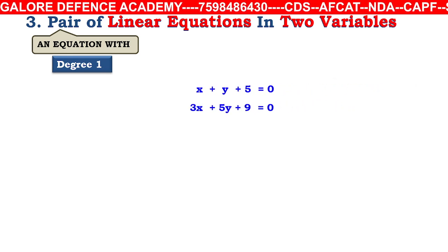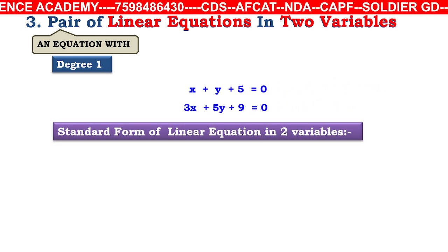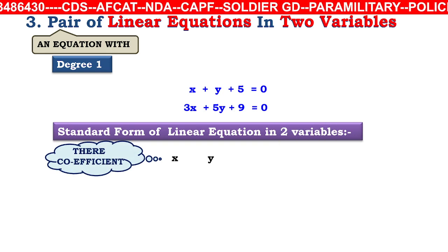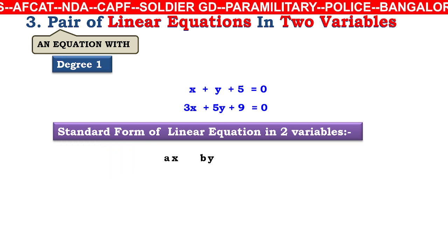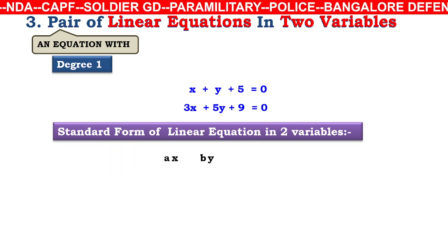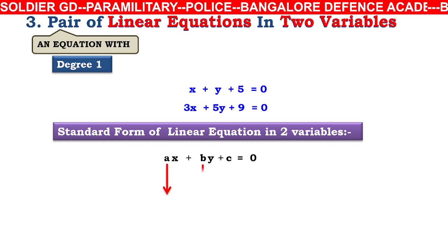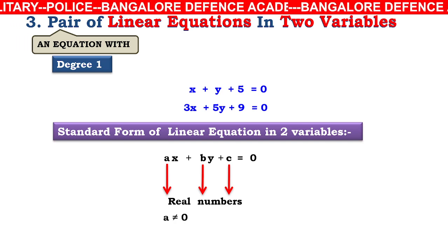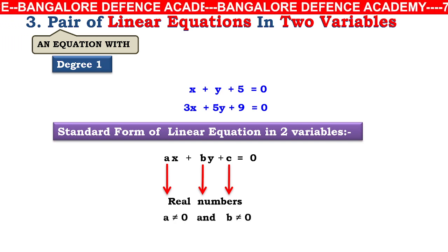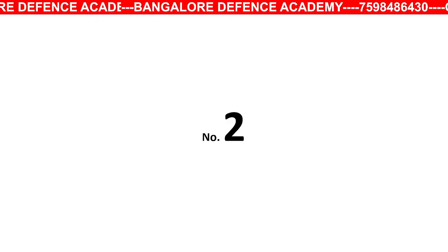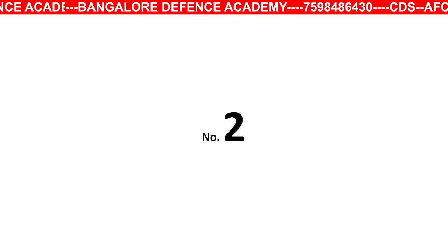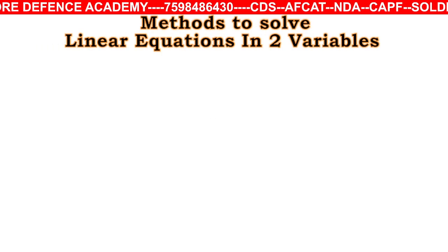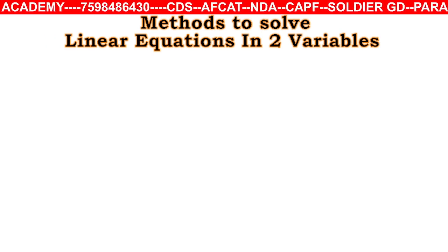The standard form of a linear equation in two variables is ax + by + c = 0, where x and y are the variables and a, b are the coefficients. The conditions are: a, b, and c are real numbers, and a ≠ 0 and b ≠ 0.